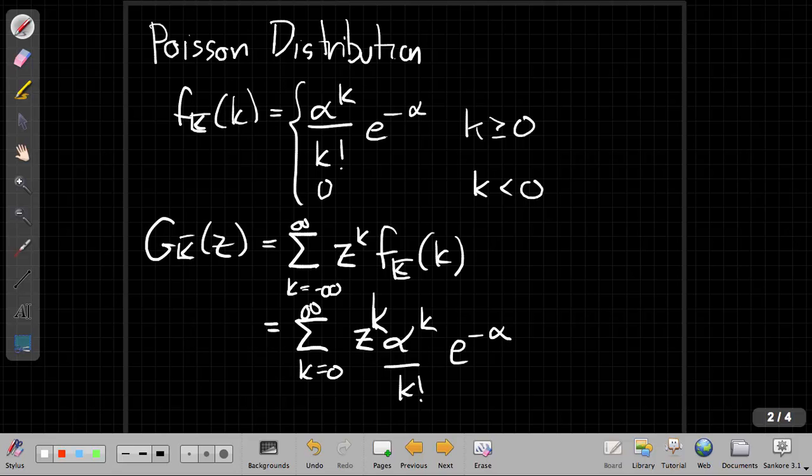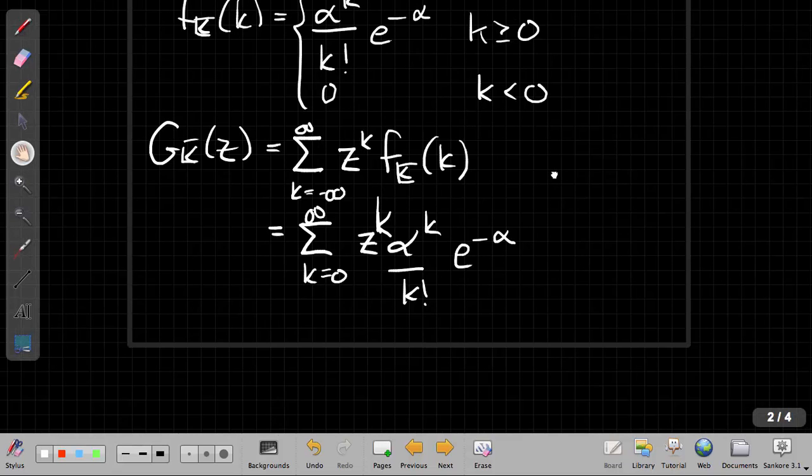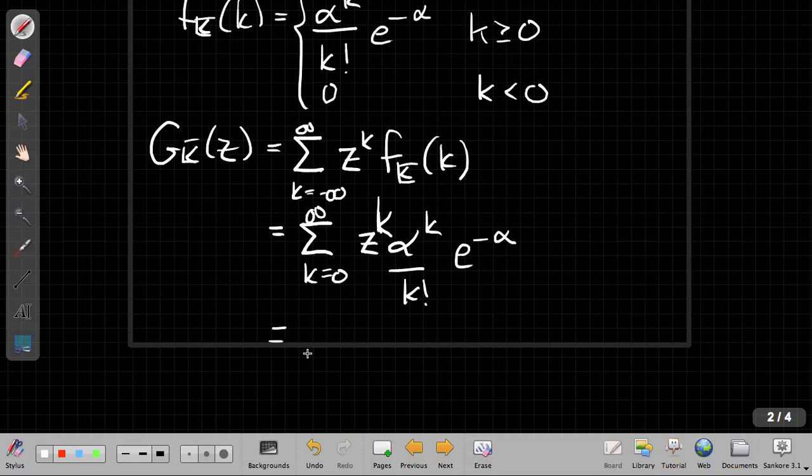Now I want to regroup some terms to clean it up. This e to the minus alpha can move out front because it doesn't care about the sum over k. It's not a function of k, and so when I'm done simplifying this I can get an e to the minus alpha out front here.